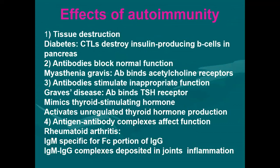There are four effects of autoimmune. Number one is tissue destruction. For example, in diabetes there is destruction of insulin-producing beta cells. Number two is antibody blocking of normal function, like in myasthenia gravis, where antibody binds acetylcholine receptors, blocking normal functioning.